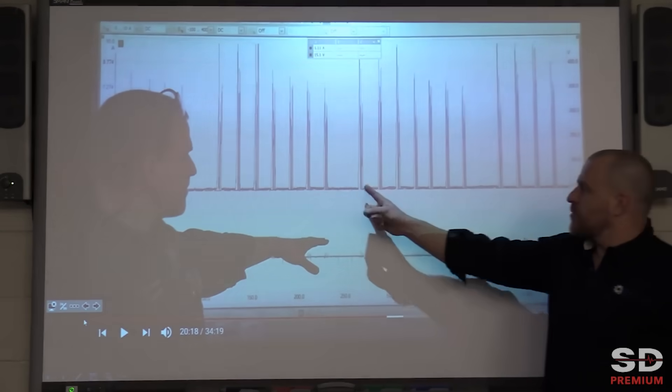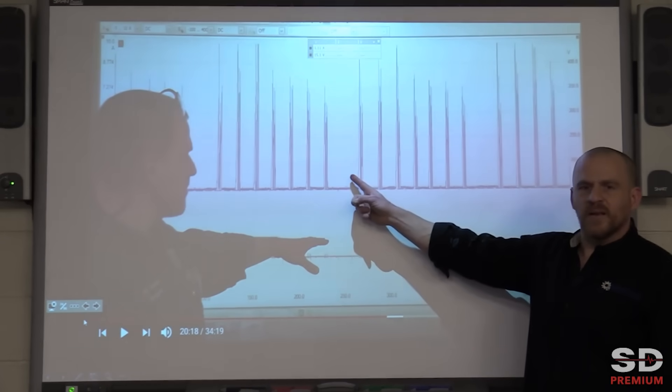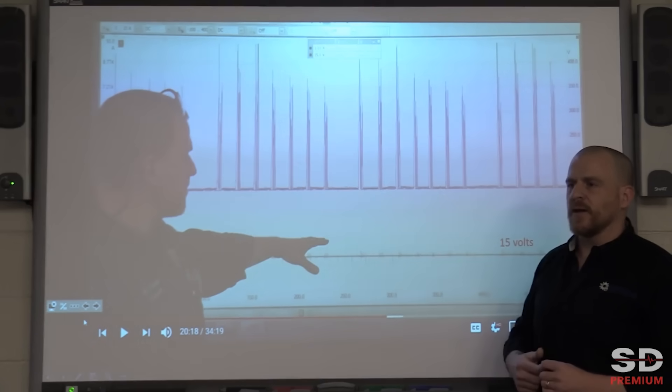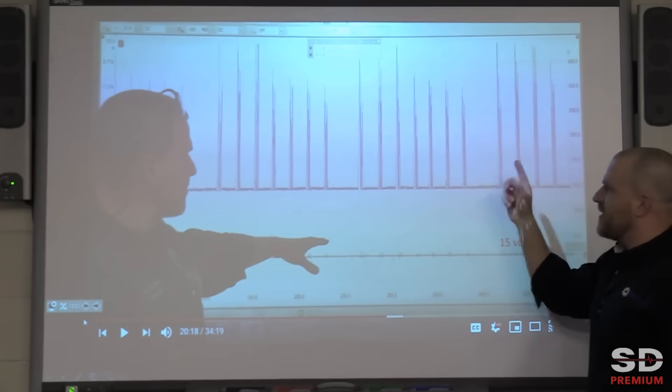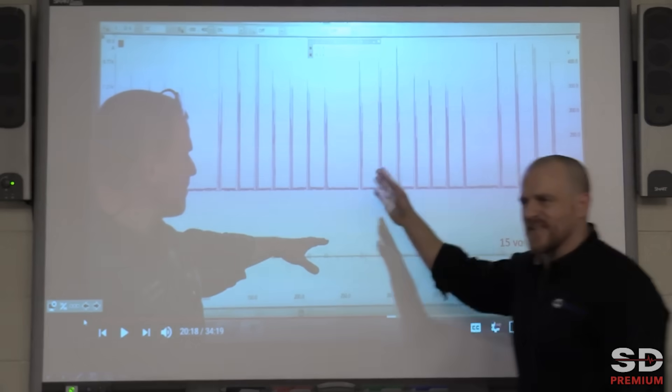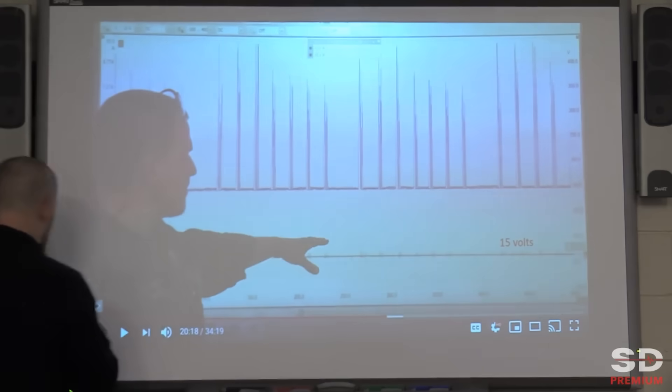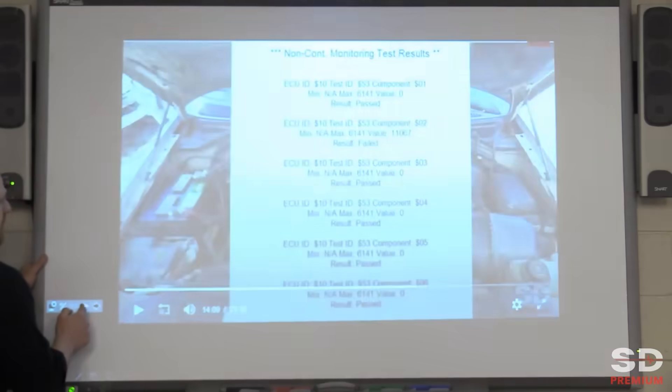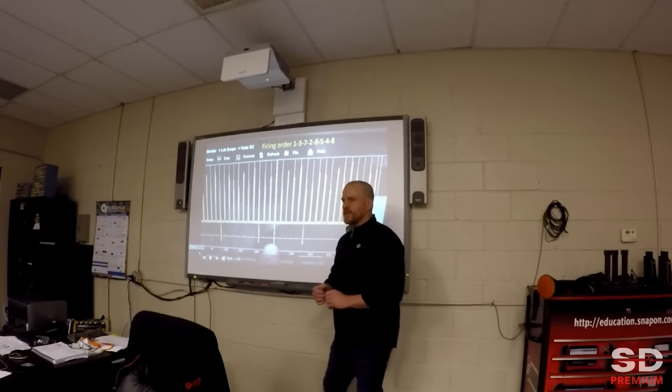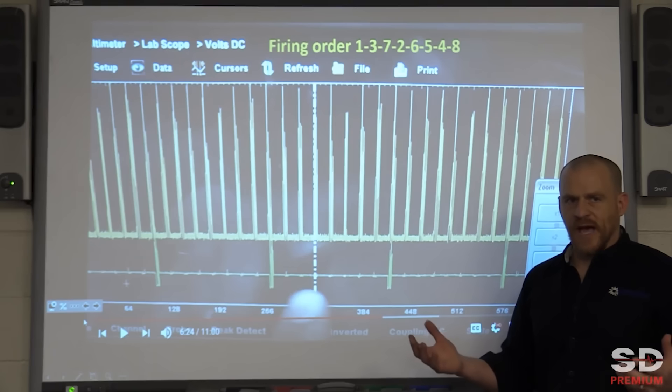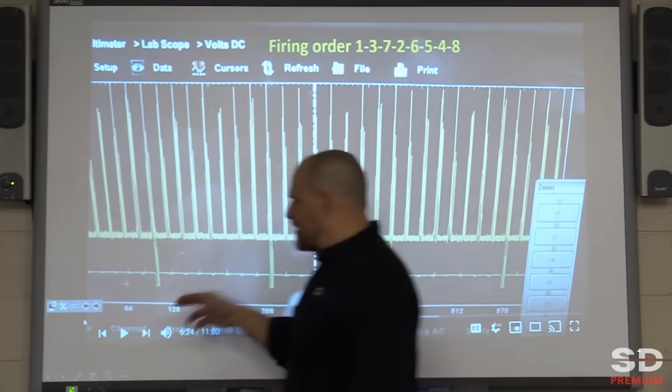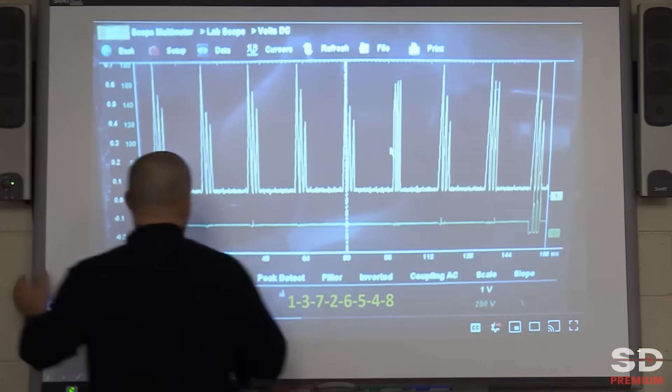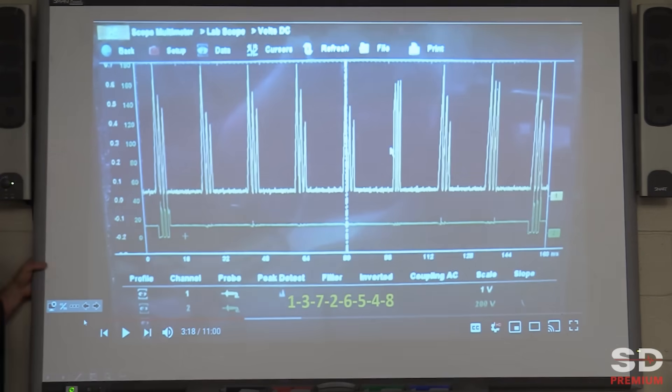By the way, with this one, what else can we look for in here if we're doing a misfire diagnosis? This one has a constant miss by the way. What else can we look for in here? I'm going to come back to this. I see one, two, three, four, five, six, seven and a gap, and then it repeats itself. I have a missing ramp here.